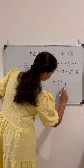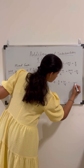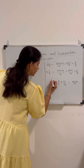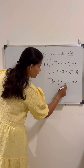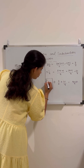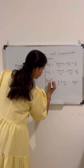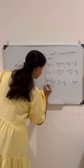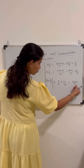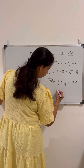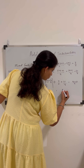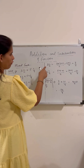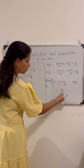Taking the LCM of 2 and 4, which is 4, we convert 7 by 2 into 14 by 4. And 21 by 4 is already in the correct form. Now the denominators are the same, so we add the numerators: 14 plus 21 equals 35. So the result is 35 by 4.